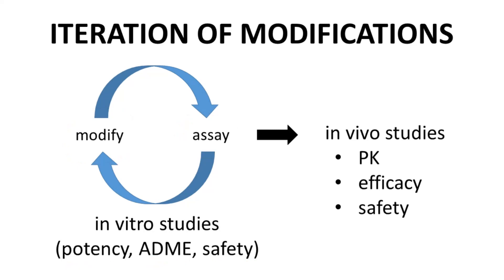Once the in vitro properties have been improved to an adequate level, the most promising compounds will be studied in vivo in a preclinical animal species. PK studies are normally performed first to ensure that adequate exposure can be achieved in the plasma by the selected route of administration.